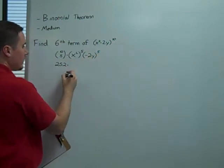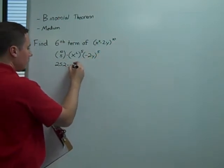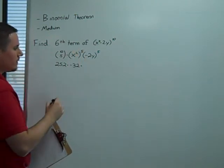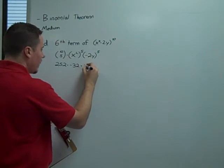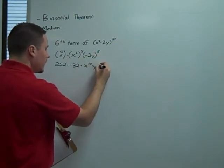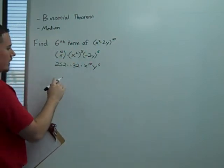Negative 2 to the fifth is going to be negative 32. X squared to the fifth is x to the tenth. And y to the fifth is just y to the fifth. And we've taken account of everything here.